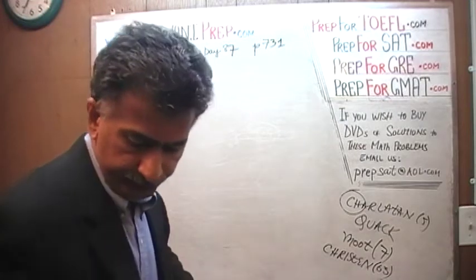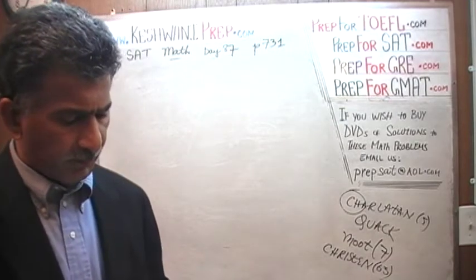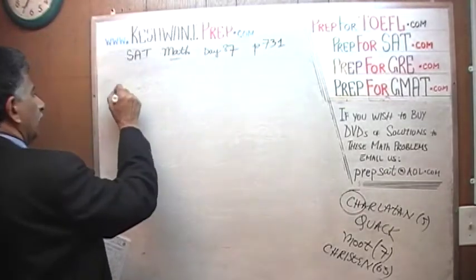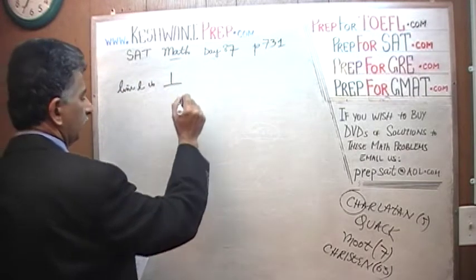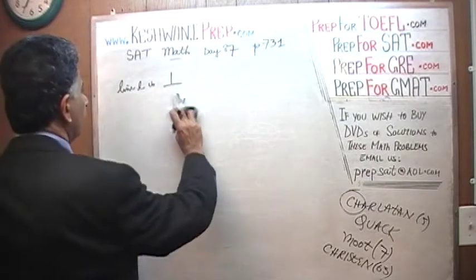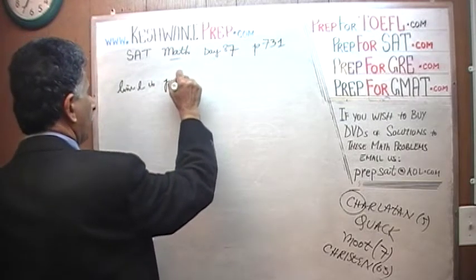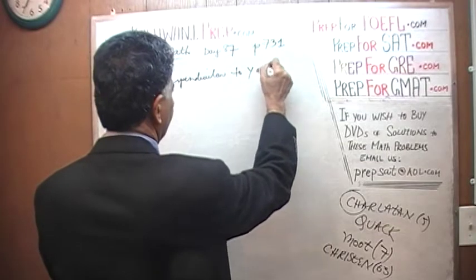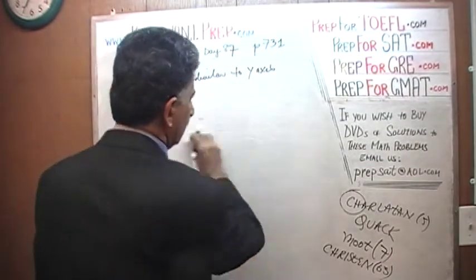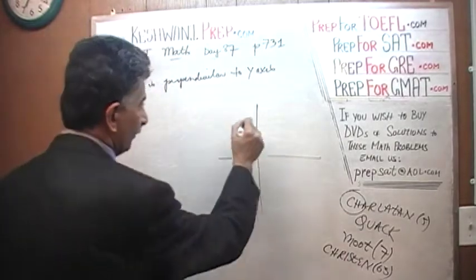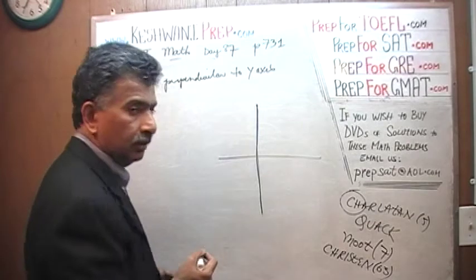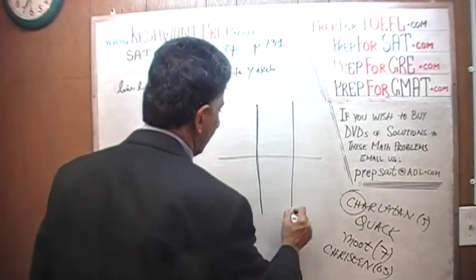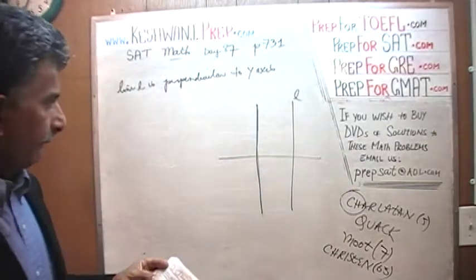Page 731, let's see what they have to say. In the x-y coordinate plane, we are told that line L is perpendicular to the y-axis. Let's make a note of it. Line L is perpendicular — let's spell it out — line L is perpendicular to the y-axis. So let's draw our line L. This is our y-axis, and we are told that line L is perpendicular to the y-axis.